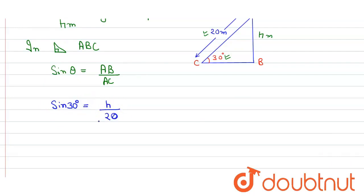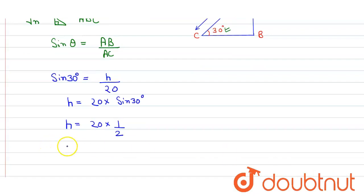So h is equal to 20 into sine 30 degrees. And the value of sine 30 degrees is 1 by 2. So 20 into 1 by 2, we get the height is equal to 10 meters.